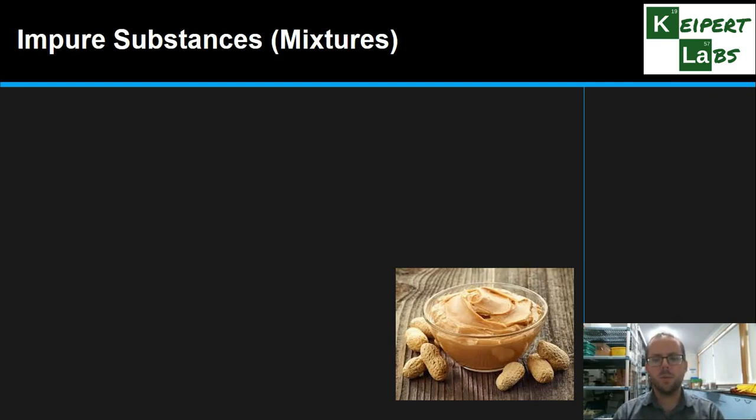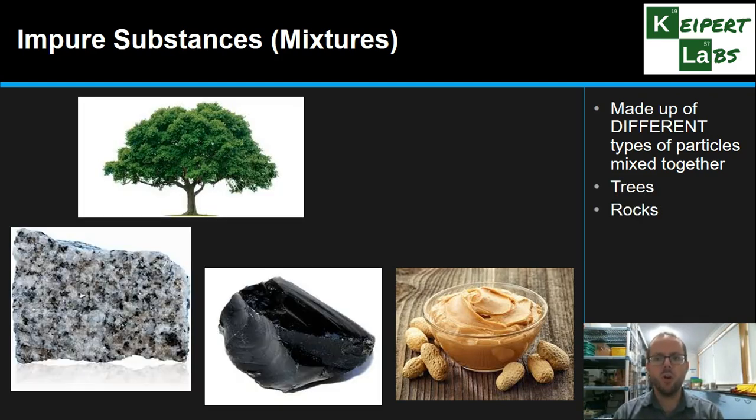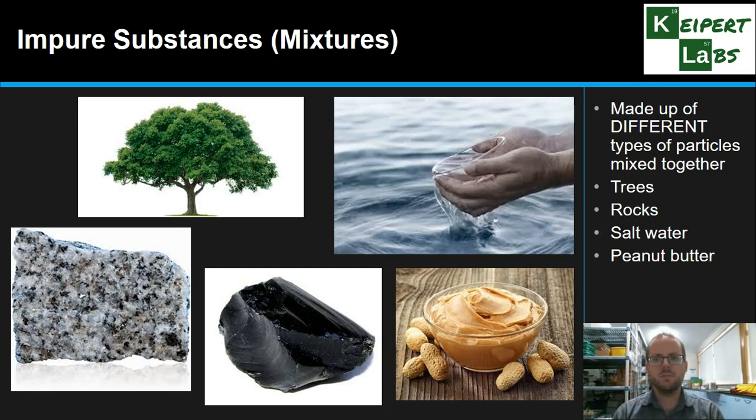However impure substances, or what we would call mixtures, we can see one example that's popped up in the bottom, are made up of different types of particles mixed together in some way. Now that mixture might vary in how it's put together, it might be really consistent, but there's more than one type of particle in there. So a tree is a mixture. Rocks like granite or obsidian that you can see here are mixtures. Salt water is a mixture. Peanut butter is a mixture. We call them impure because they're made up of different types of particles.